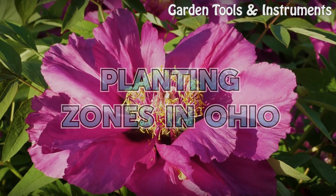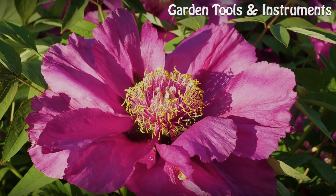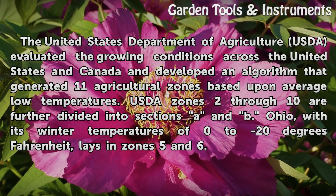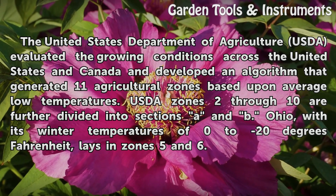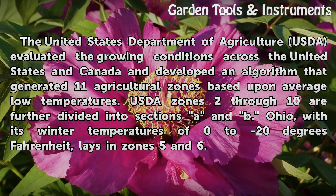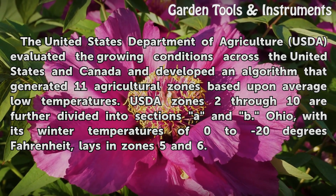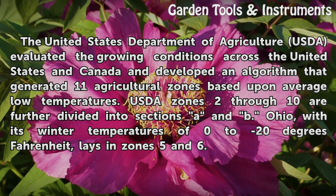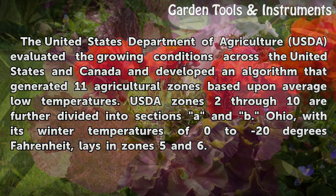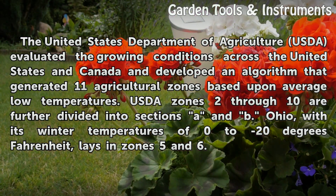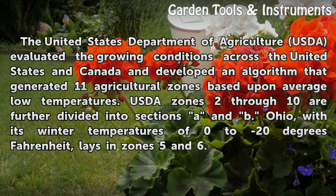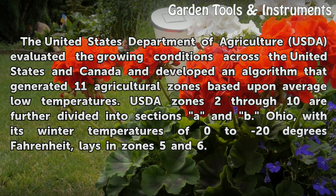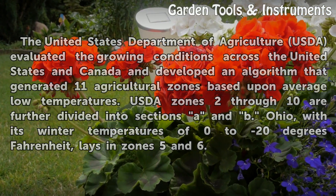Planting Zones in Ohio. The United States Department of Agriculture (USDA) evaluated the growing conditions across the United States and Canada and developed an algorithm that generated 11 agricultural zones based upon average low temperatures. USDA Zones 2 through 10 are further divided into sections A and B. Ohio, with its winter temperatures of 0 to 20 degrees Fahrenheit, lays in Zones 5 and 6.